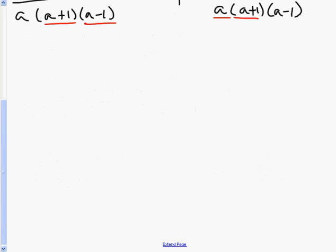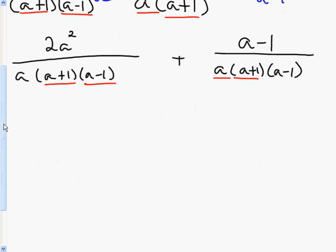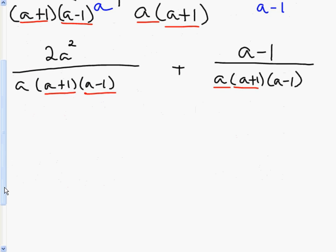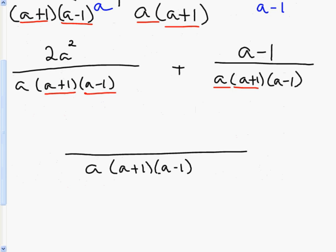So my new problem is 2a² over a(a+1)(a-1) plus (a-1) over a(a+1)(a-1). Once you do that, you're back to the same idea we've discussed before: you have a like denominator. So we write down that denominator a(a+1)(a-1) and add the numerators together, giving us 2a² plus a minus 1.